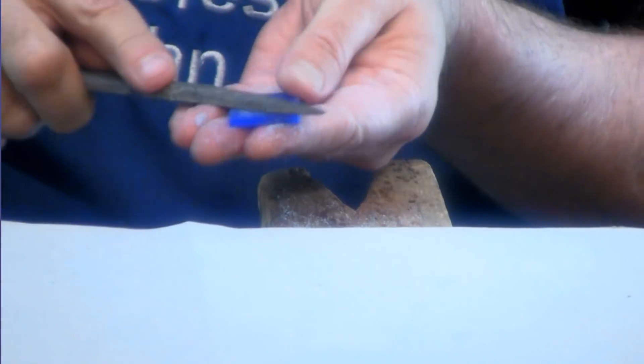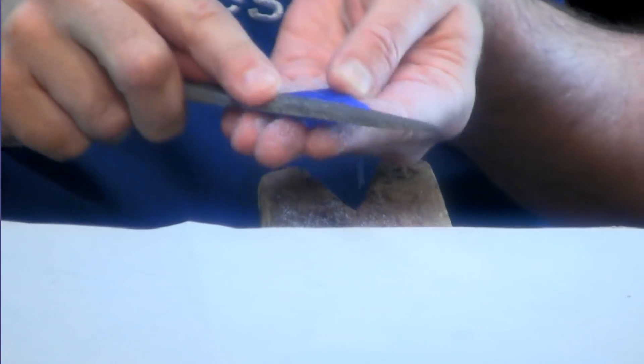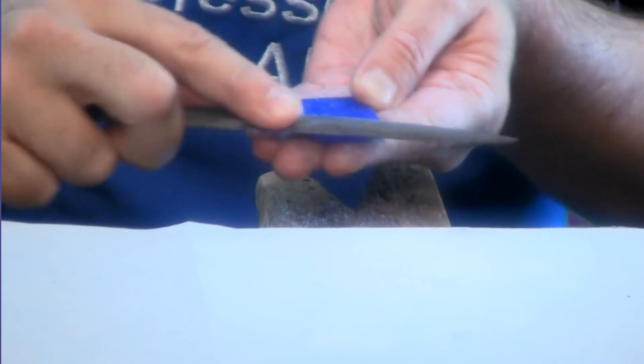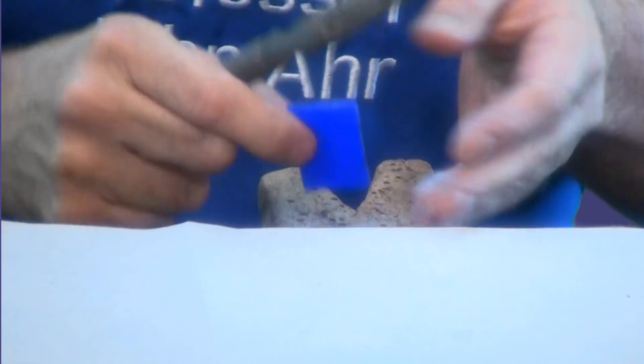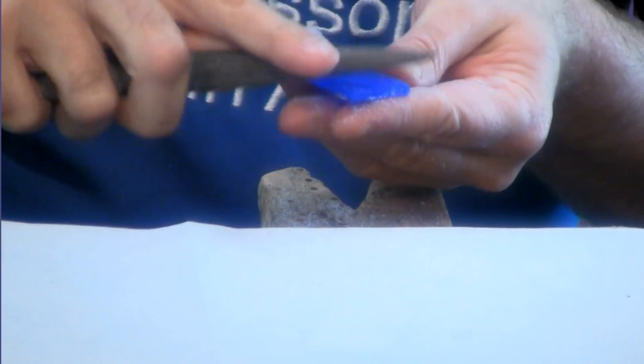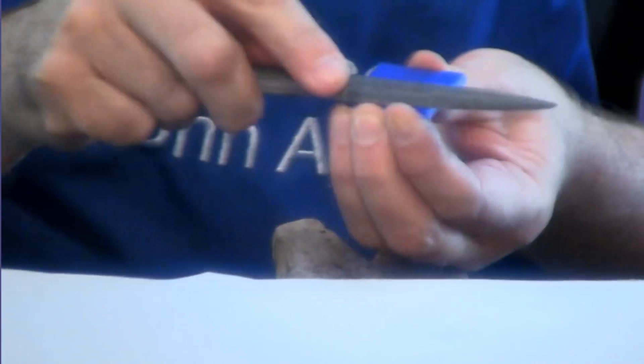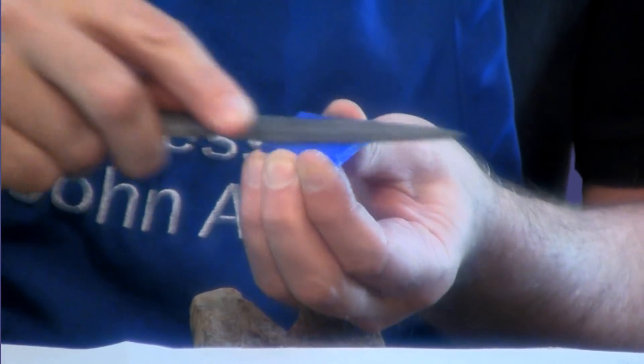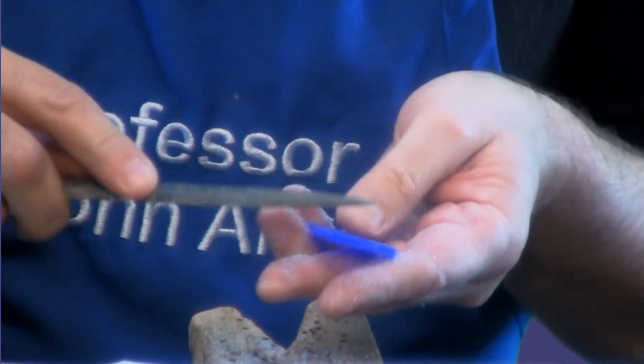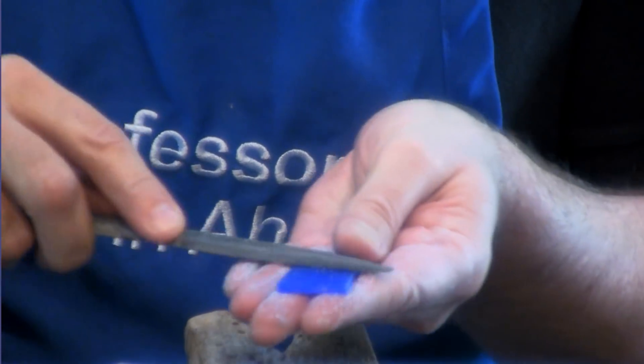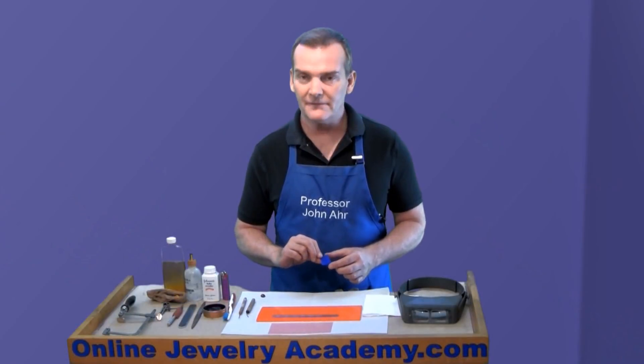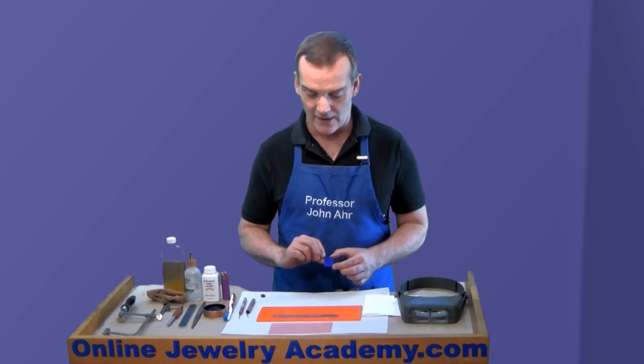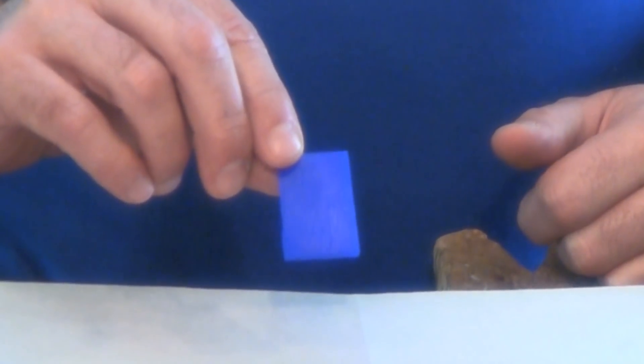Next, I'm going to use my double-sided file to remove the saw marks from the surface of the wax. Once I've taken down the saw marks quite a bit, I'll flip the file around and use the finer side to finish it off. I'm removing the saw marks because they're quite coarse, and unless you really want that texture to show on your piece, you probably want to get rid of them. Once I finish up with the fine end of the file, I end up with something that looks like this.